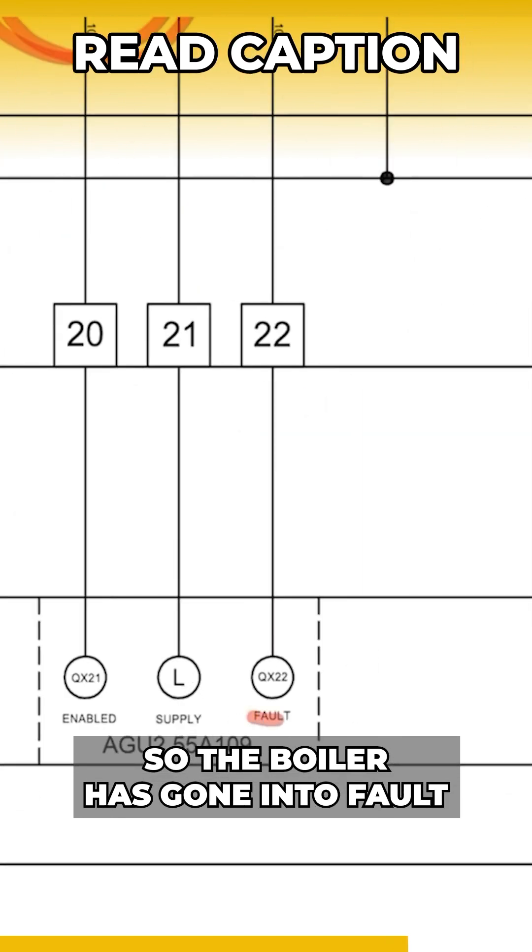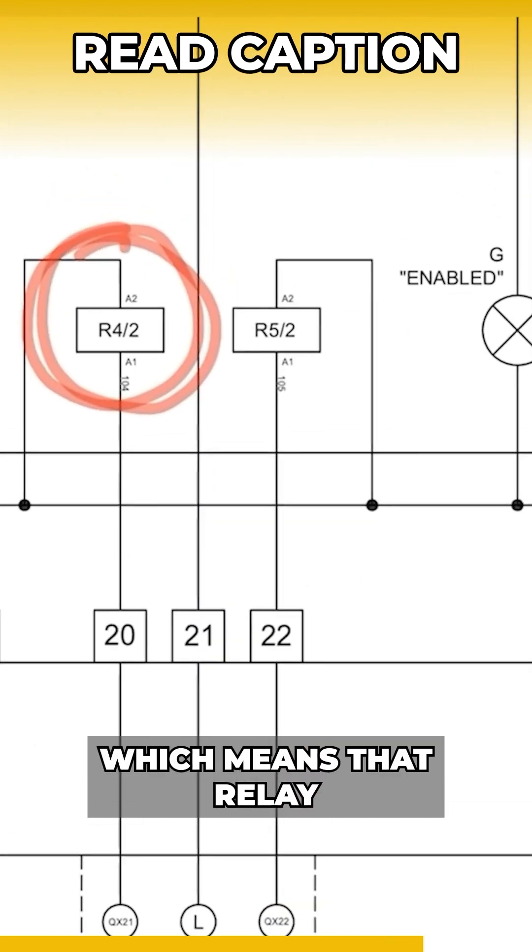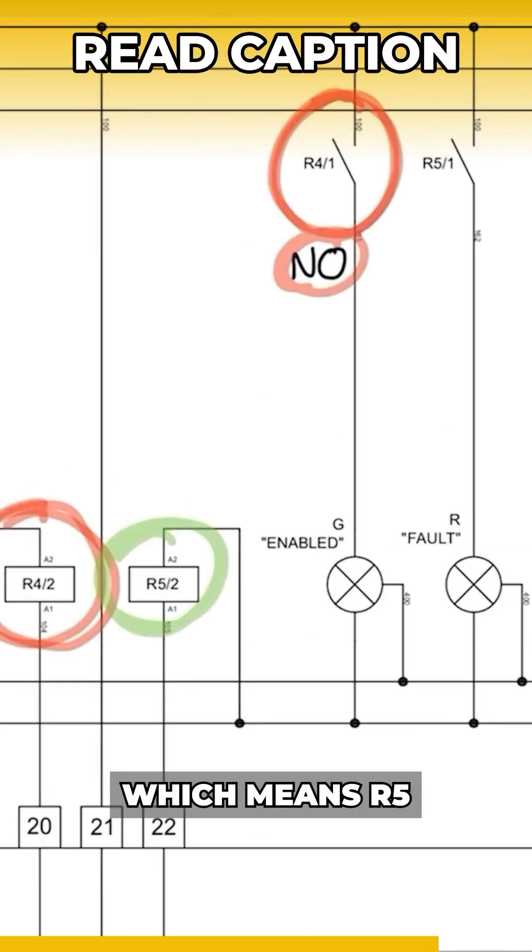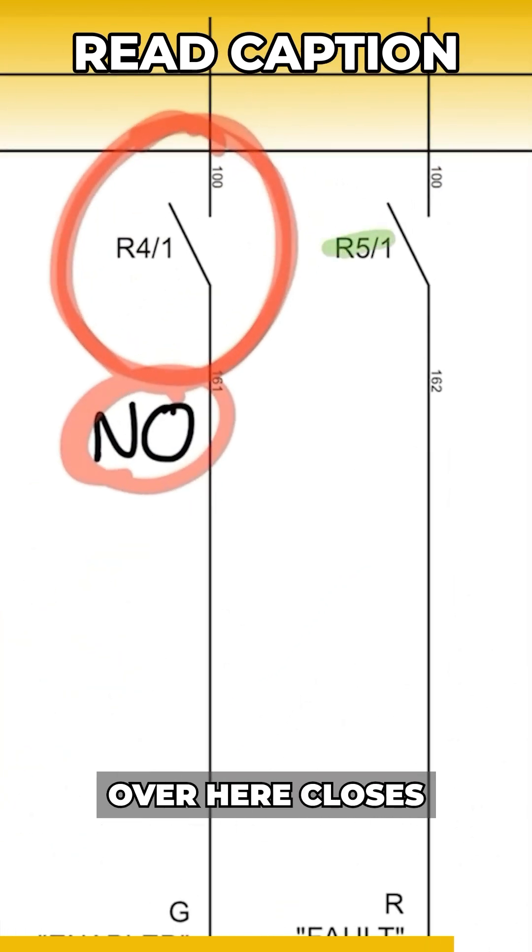So the boiler has gone into fault, which means that relay five does energize, which means R5 over here closes and then allows current to flow.